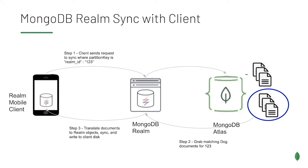I'm going to show you how to set up a MongoDB Realm app, set up the documents you want to sync, and then set up the MongoDB Realm client on the mobile side. Then we're going to show you how to set up the partition key, send it to MongoDB Realm, and then it's going to grab the documents that match and send them down to the client.